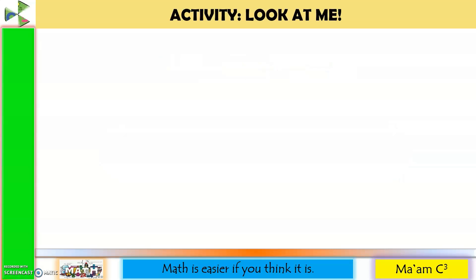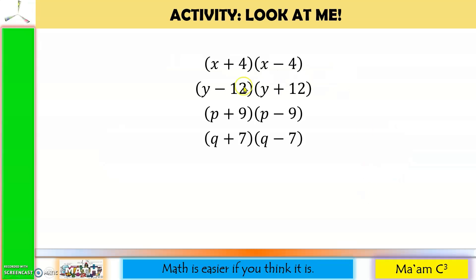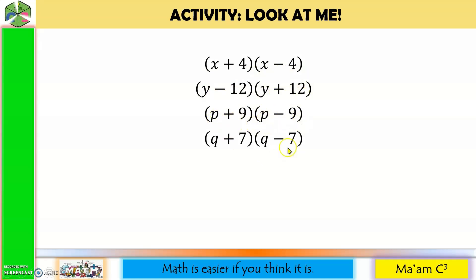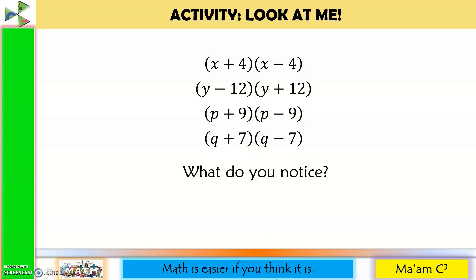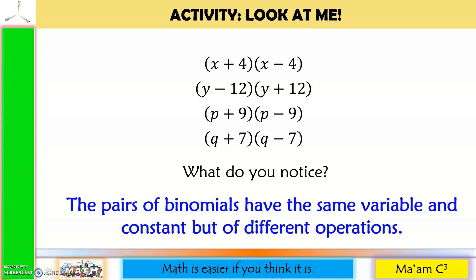Take a look at these pairs of binomials: x plus 4, x minus 4; y minus 12, y plus 12; p plus 9, p minus 9; q plus 7, q minus 7. What do you notice? The pairs of binomials have the same variable and constants but different operations.